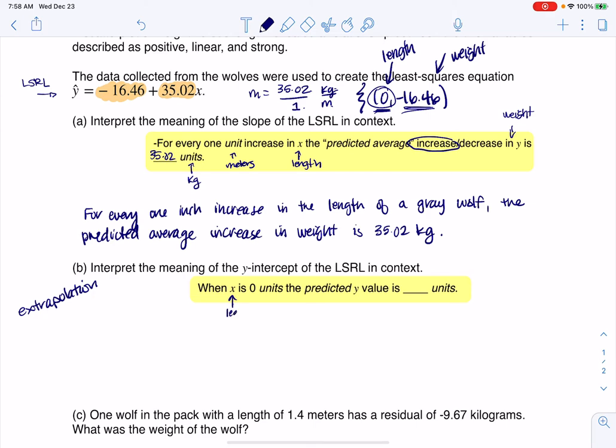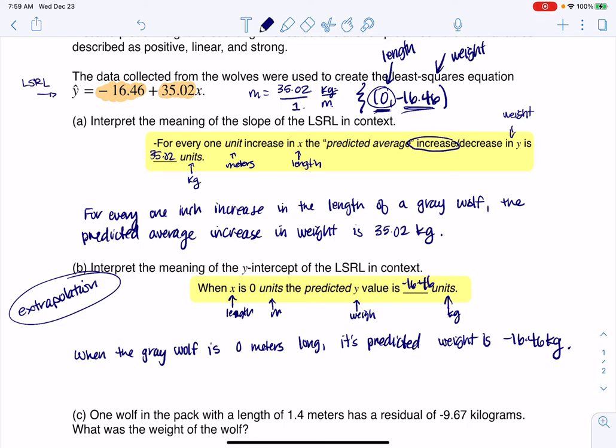This is going to be length. This is going to be meters. This is going to be weight. This is going to be kilograms. And this is going to be negative 16.46. So let's put that into a sentence. When the gray wolf is 0 meters long, its predicted weight is negative 16.46 kilograms. That's extrapolation, but that is how we would interpret it.